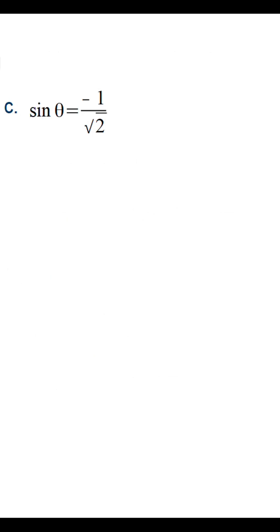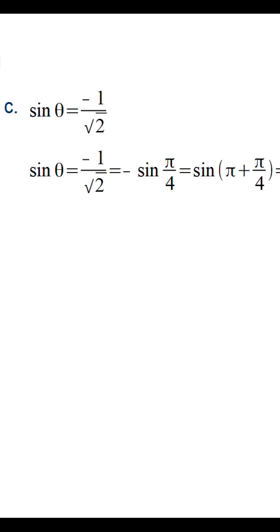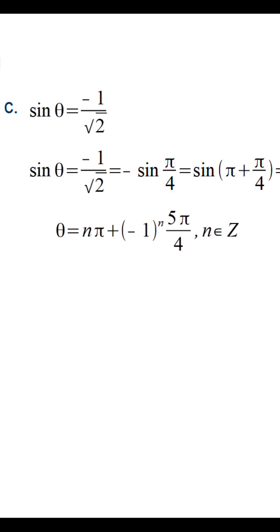Sine theta is equal to minus 1 by root 2. We know that sine pi by 4 is equal to 1 by root 2, but here we have negative sine, which means that this lies in the third quadrant. And hence, it is equal to sine 5 pi by 4. Substituting 5 pi by 4 in the general solution formula, we get theta is equal to n pi plus minus 1 raise to n, 5 pi by 4.